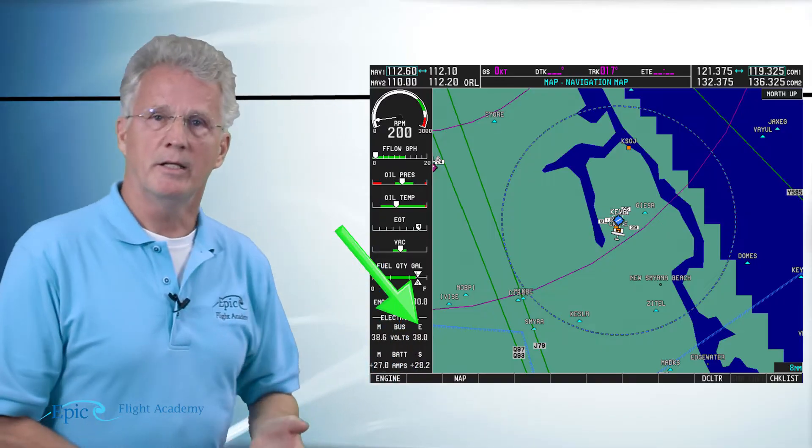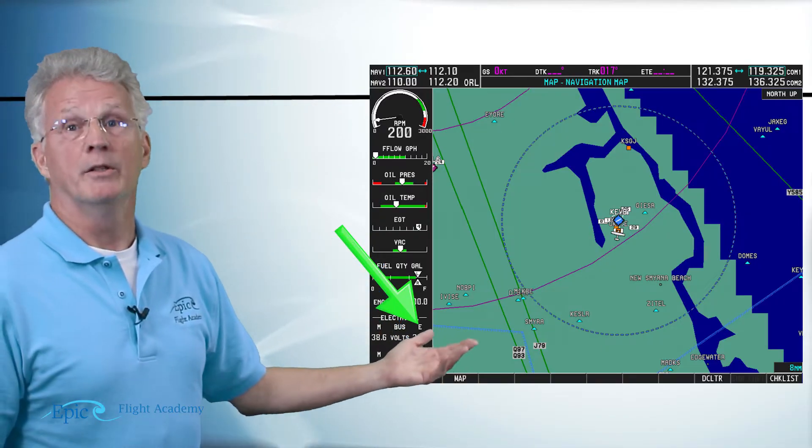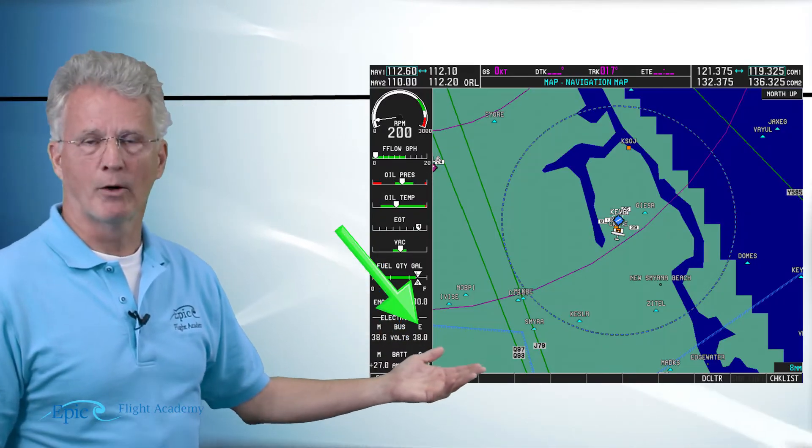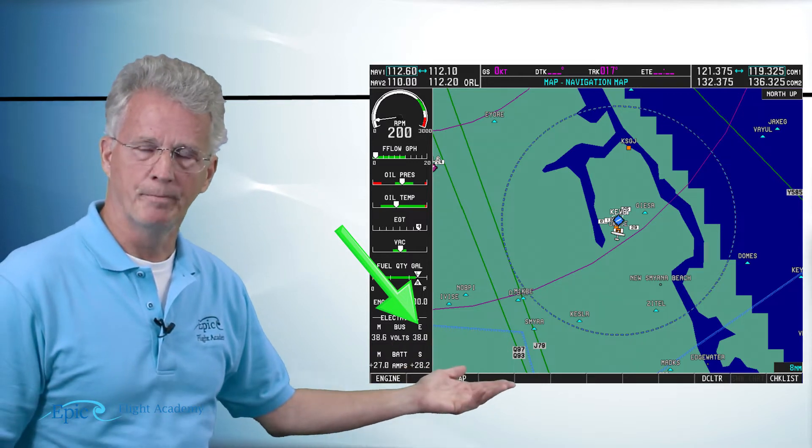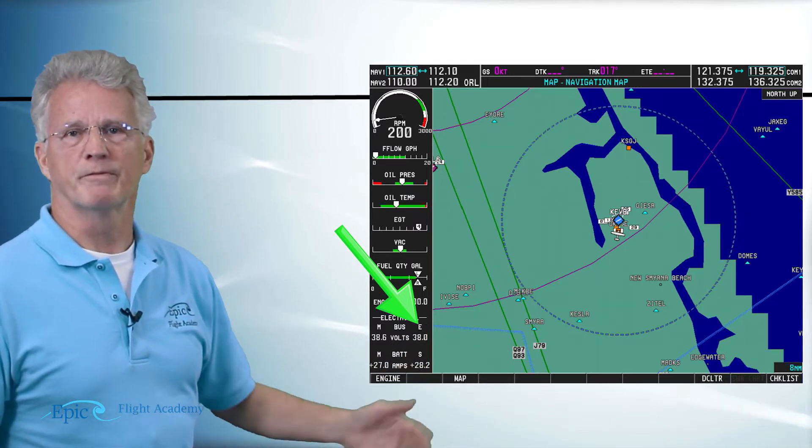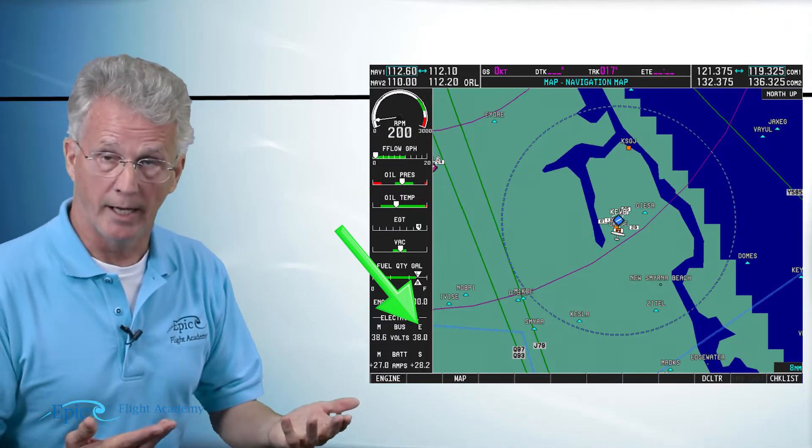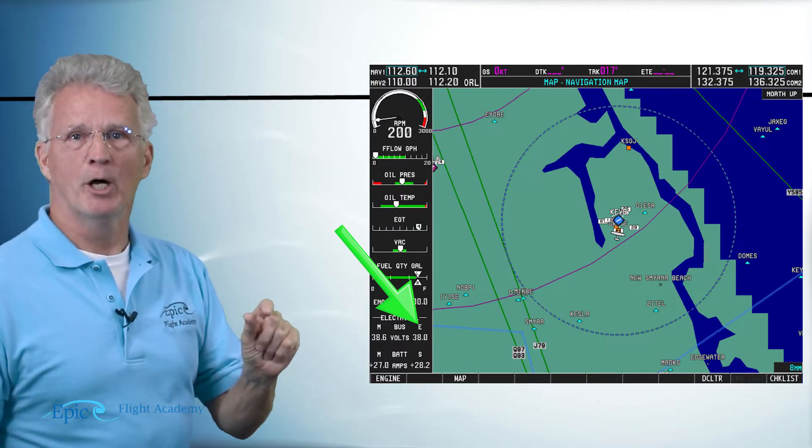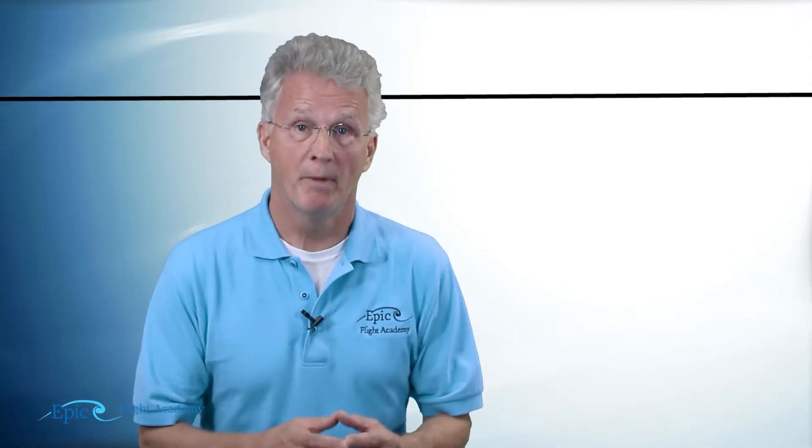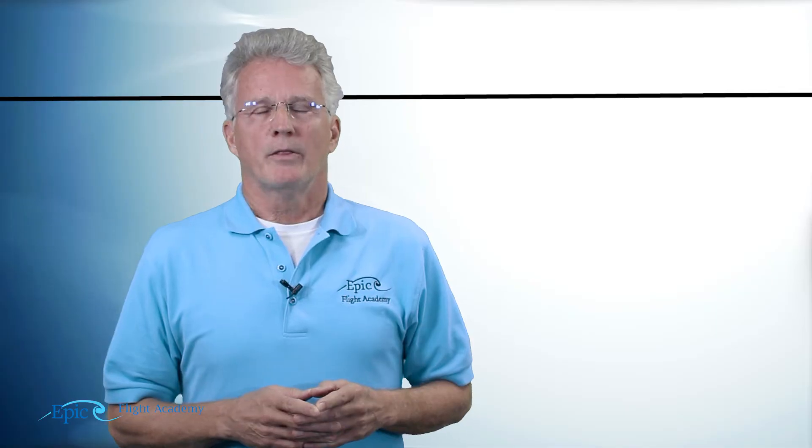Instead of S bus, it might say E. S would be for standby, E would be for emergency. The emergency bus is powered by the standby battery. In any case, you see a specific number here. That's telling you, as the pilot, that is how much amperage is being supplied to the electrical system.